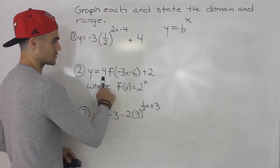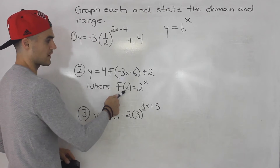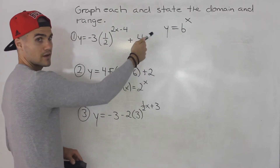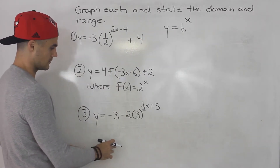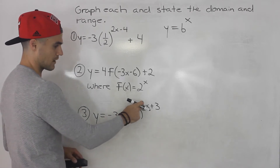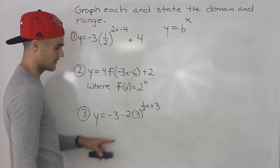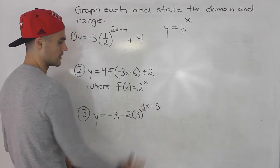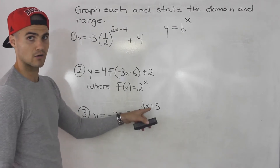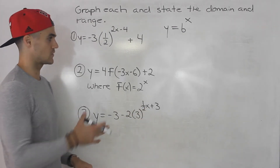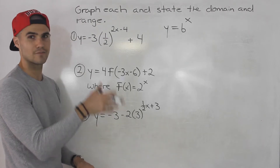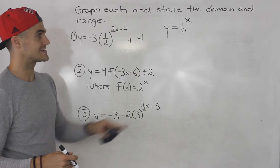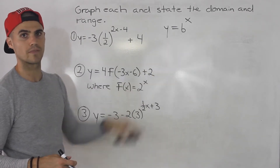For number two, we're given function notation and told that f of x, the parent function, is two to the power of x, so the b value is two. For number three, negative three minus two times three to the power of one half x plus three, the base is three, so the parent function is three to the power of x. This is one difference from functions like x squared or absolute value x — the parent function changes depending on what the base is.